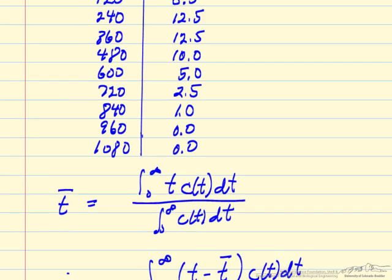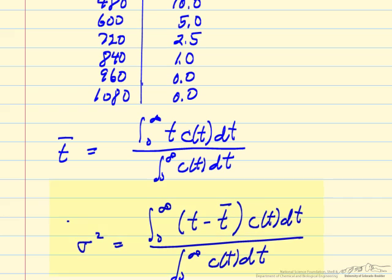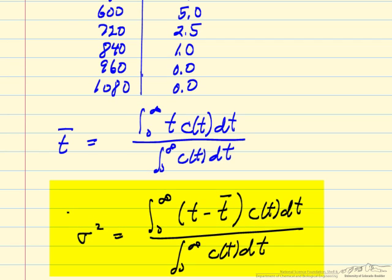We can also get the spread. In this case we're looking at integrating the quantity (time minus the average time) squared — so it's always a positive value — times the concentration as a function of time, normalized by the integral of the concentration as a function of time. This gives us sigma squared, and the square root of that is the standard deviation.